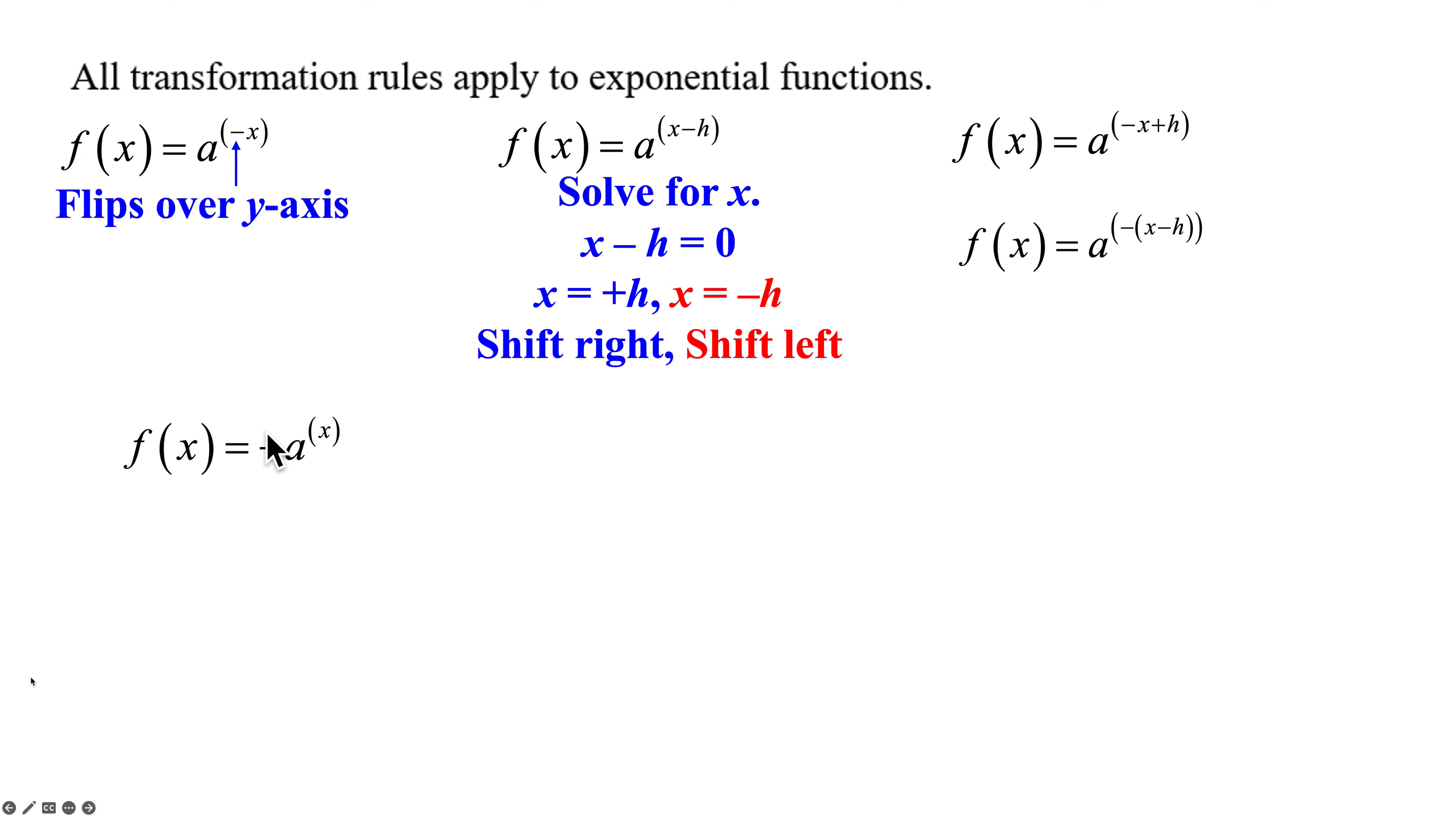If we have a negative in front of our base, then that's going to be a flip over the x-axis. And if we have a minus or a plus k again, same as with our parabola, that's going to shift us up or down.